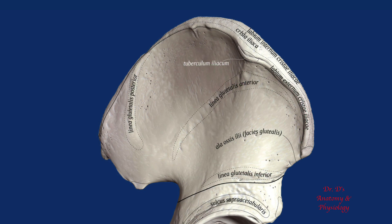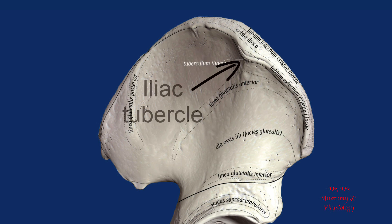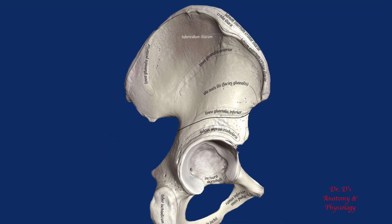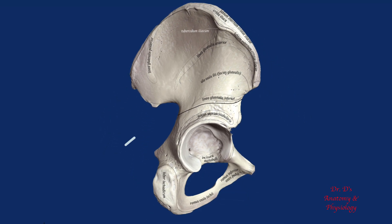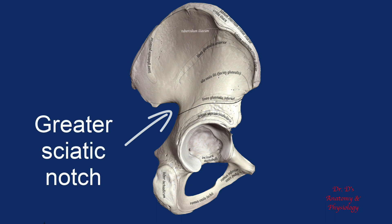Before we leave the lateral side, let's point out a few more features. There is a bump along the iliac crest on the lateral side called the iliac tubercle. And there is a deep indentation right above the body on the posterior side called the greater sciatic notch. The sciatic nerve passes through this notch.